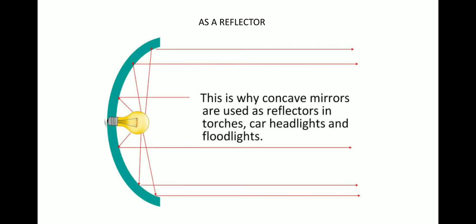Next it can be used as a reflector in torch lights, search lights or headlights of cars. The bulb lies at the focus of the concave reflector. The reflector is polished metallic surface and from the bulb which is at the focus the lights get reflected in this way and thus the parallel beam of light is obtained.